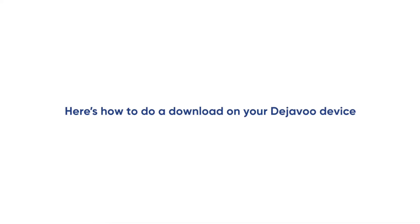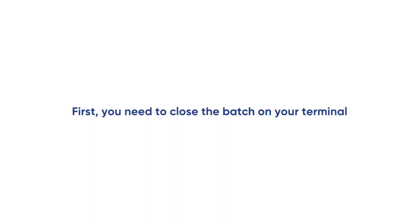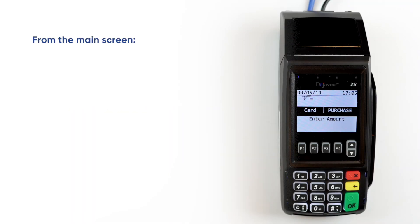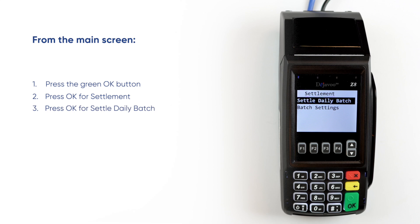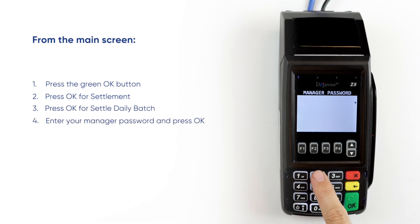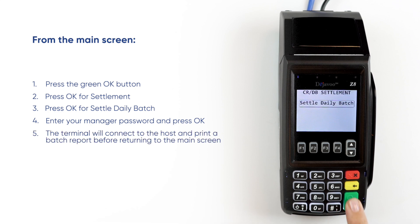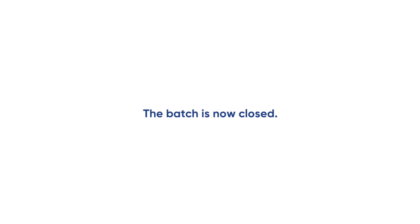Here's how to do a download on your Deja Vu device. First, you need to close the batch on your terminal. From the main screen, press the green OK button. Press OK for settlement. Press OK for settled daily batch. Enter your manager password and press OK. The terminal will connect to the host and print a batch report before returning to the main screen. The batch is now closed.